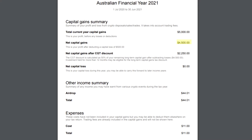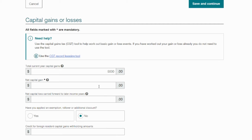Now, if you've held your crypto investment for more than 12 months, you may be eligible for a long-term gains discount. This gives you a 50% capital gains discount. Apply this discount to your capital gains minus any applicable capital losses, and that will be your net capital gain. In this example, as there were no short-term gains as per the report, the net capital gain is $2,250. So over in MyTax, we'll add $2,250 as our net capital gain.